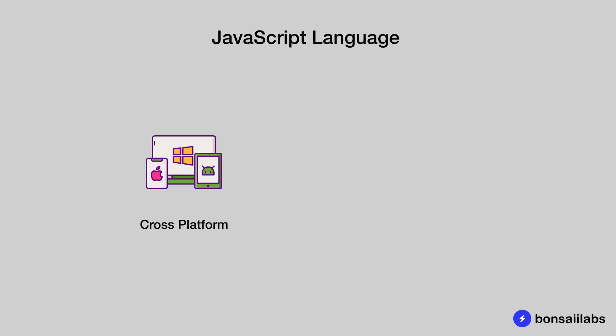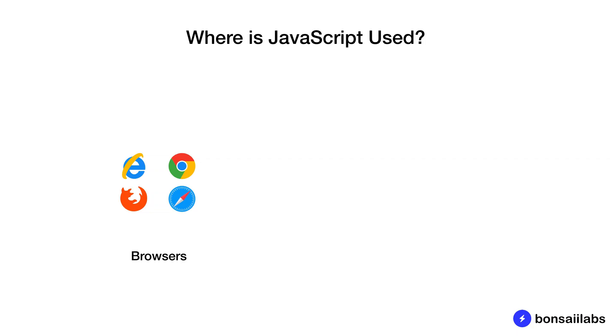JavaScript is a cross-platform language, which means you can write the code on one platform, let's say Linux, and be able to run it on Windows and Mac. JavaScript is an object-oriented scripting language that provides dynamic inheritance using a prototype-based model, which means what is inherited by objects can vary between individual objects. JavaScript is used on all browsers available today to make webpages interactive.